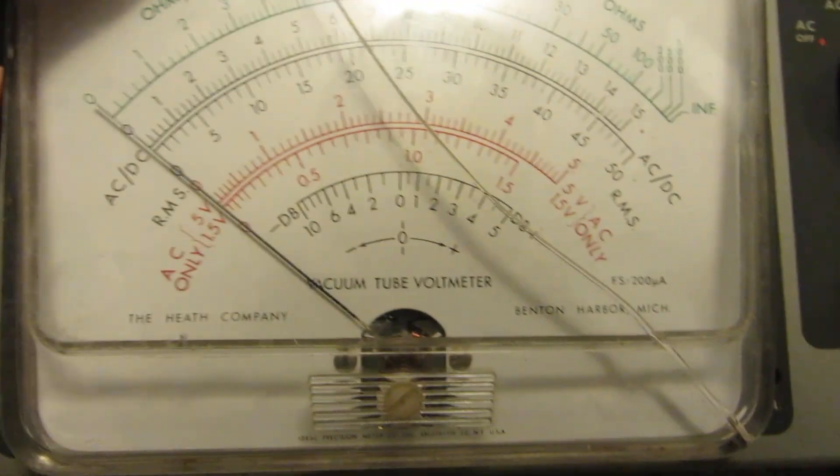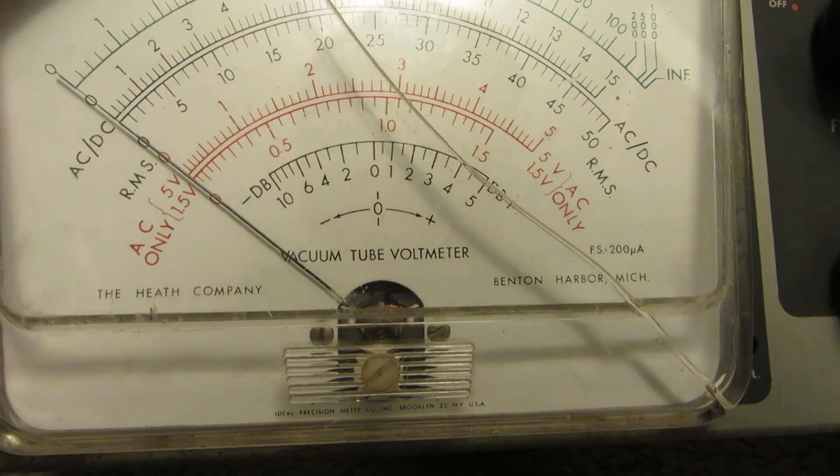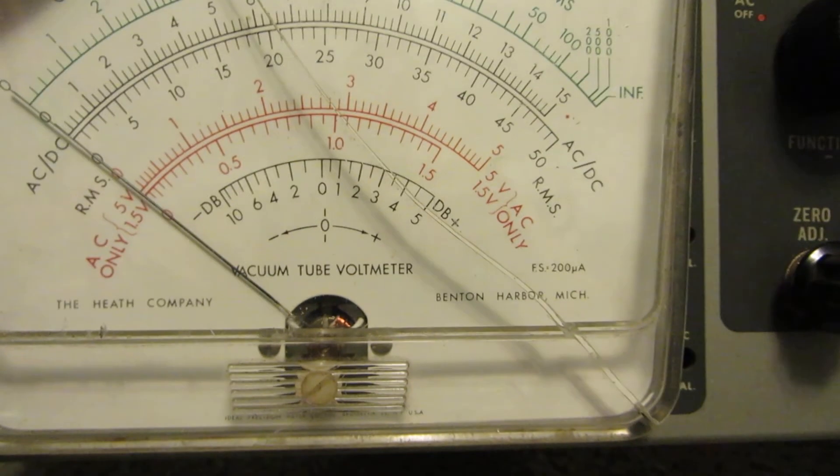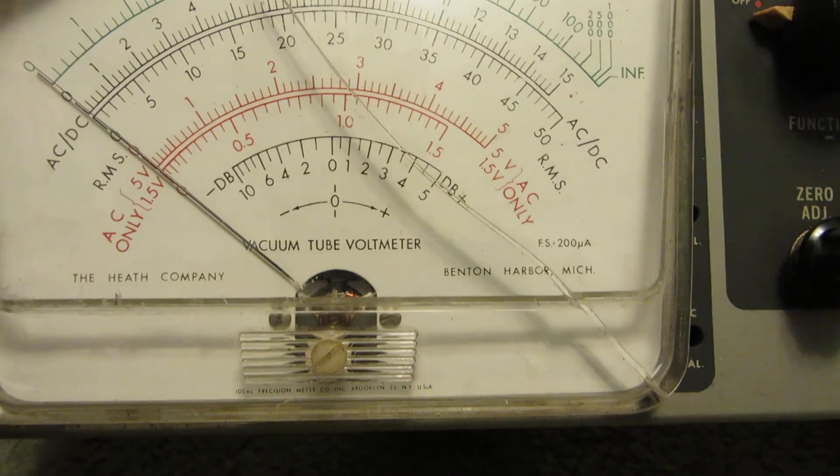So that's the Heathkit IM-13 Vacuum Tube Multimeter. Thanks for watching.